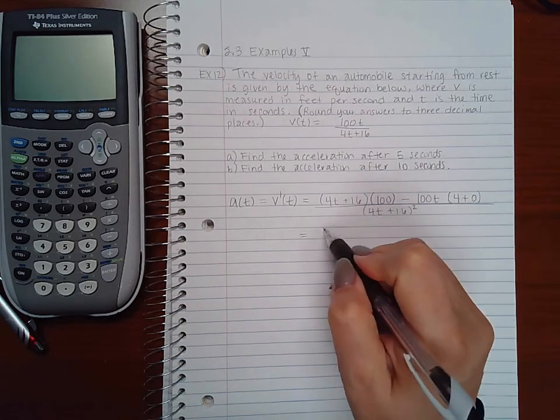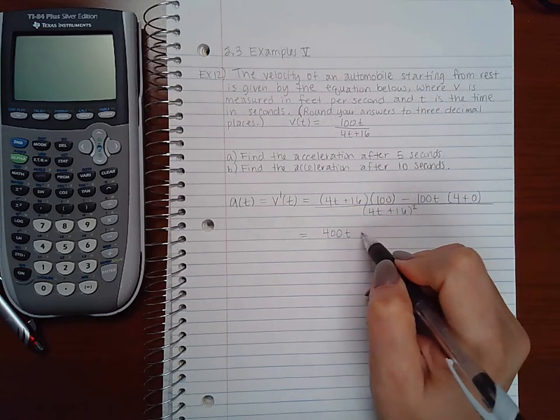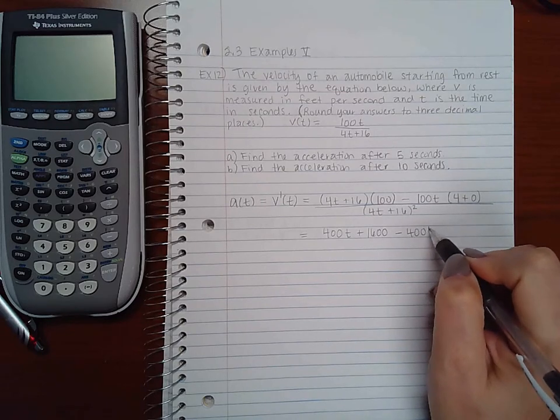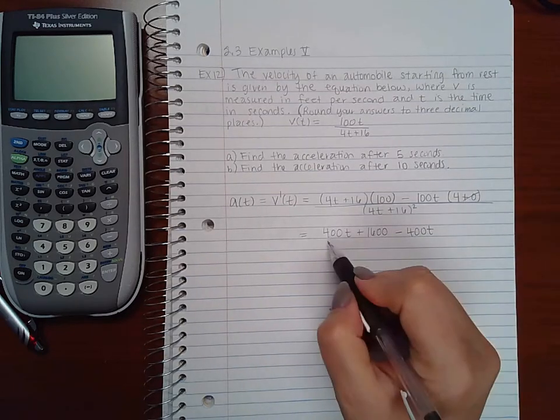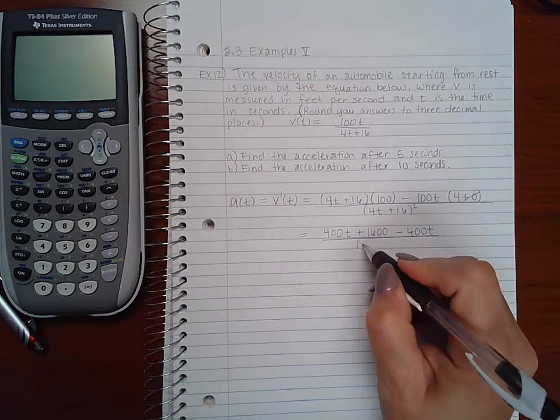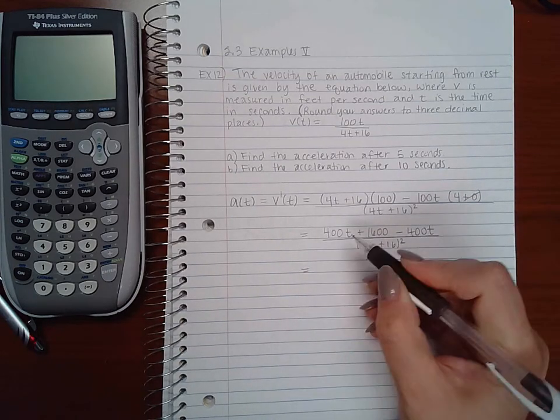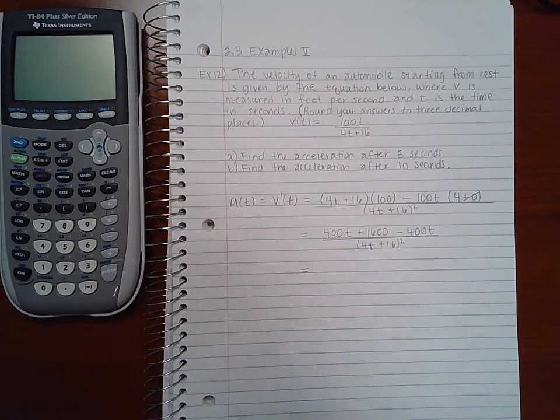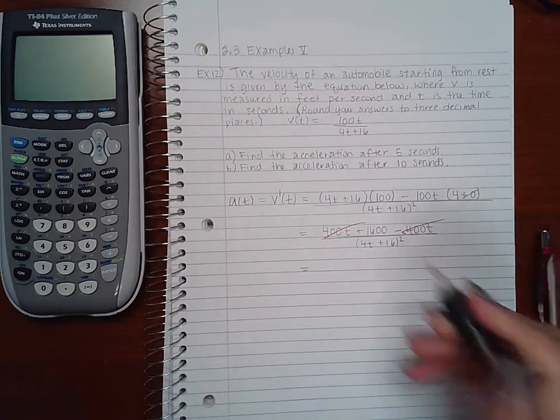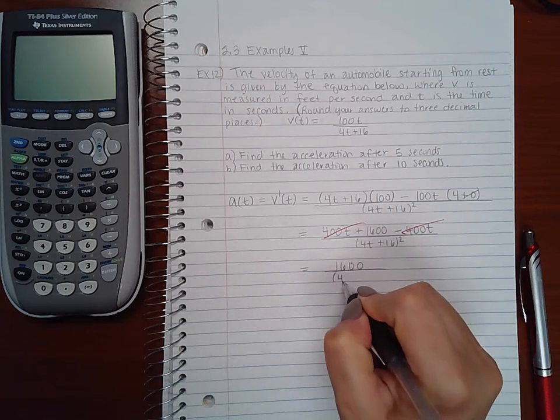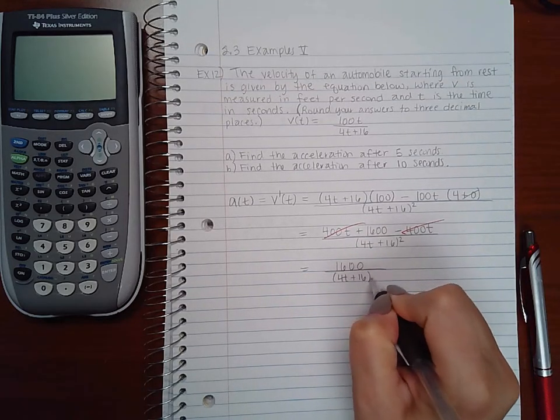So we get 400t plus 1600 minus 400t. The zero is not going to affect anything. And so then this 400t and this 400t are going to cancel each other, and I'm going to get 1600 over 4t plus 16 squared.